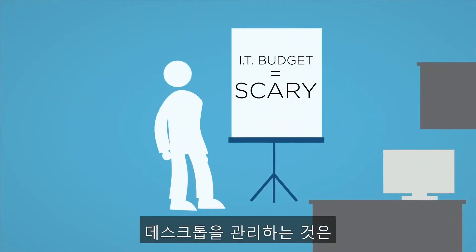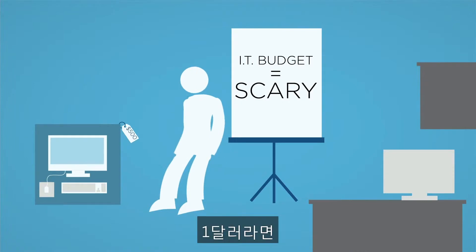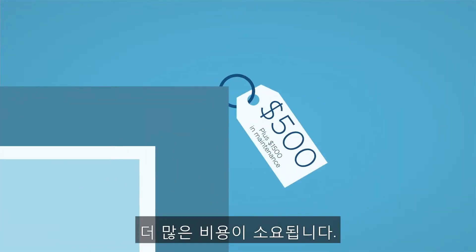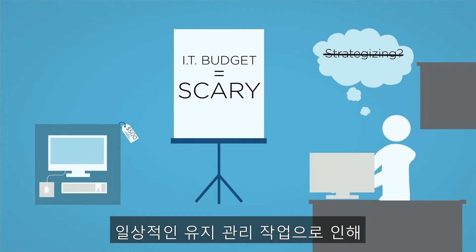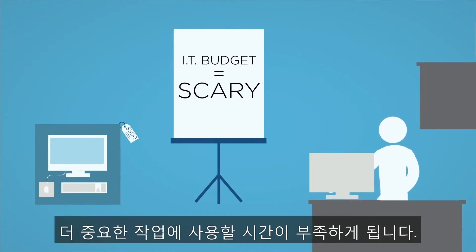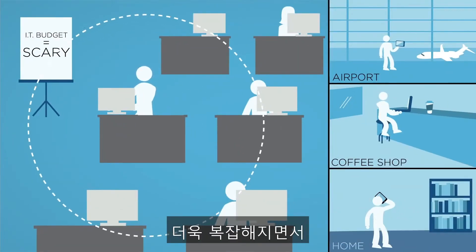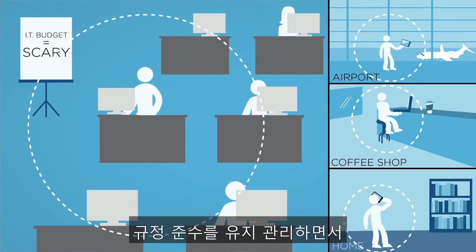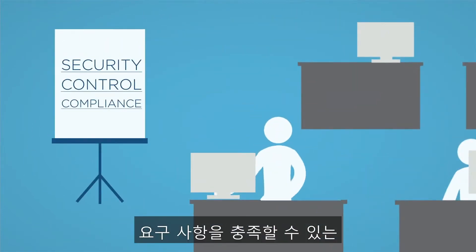And managing all of their desktops can be cumbersome and expensive. For every dollar you spend on the hardware itself, you spend another $3 managing that hardware, and even more managing the users themselves. Routine maintenance takes time away from more important tasks, as does customizing each desktop for different types of users. With the increased complexity of your desktop environment, you need the flexibility to meet the demands of a mobile and global workforce while still maintaining the security, control, and compliance required for your business.